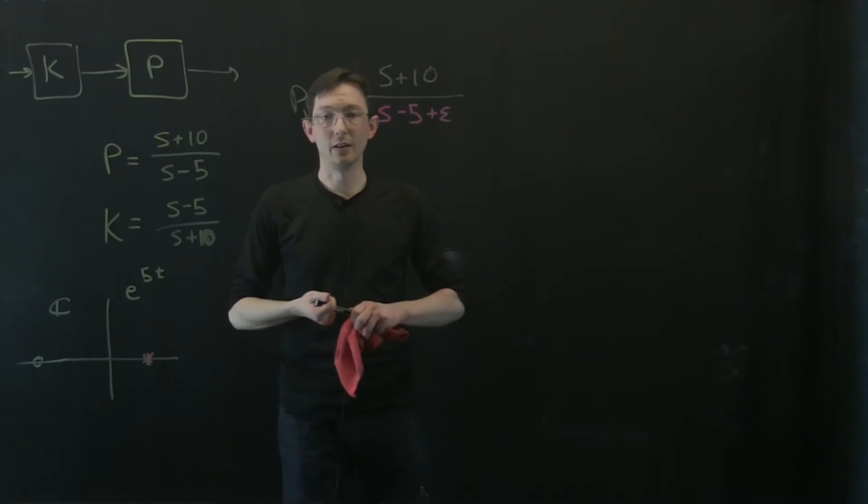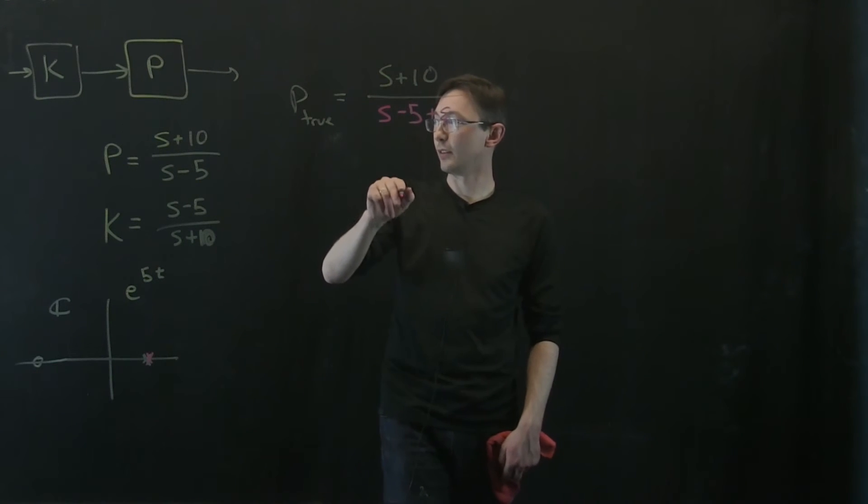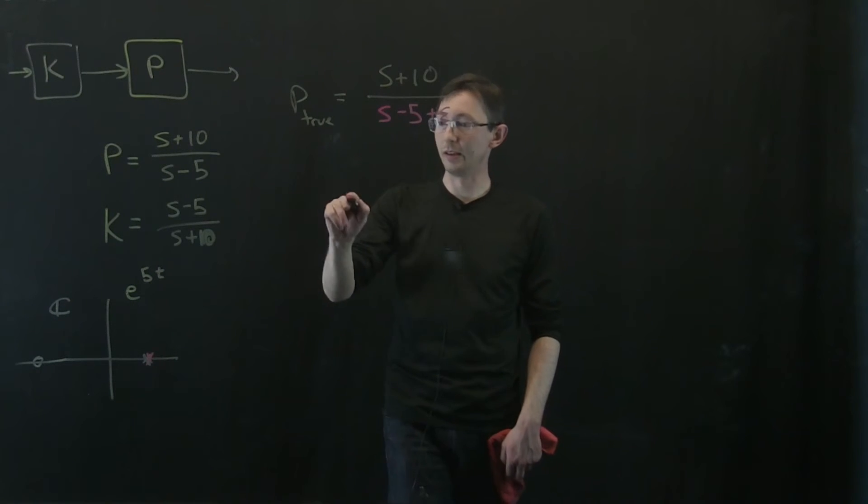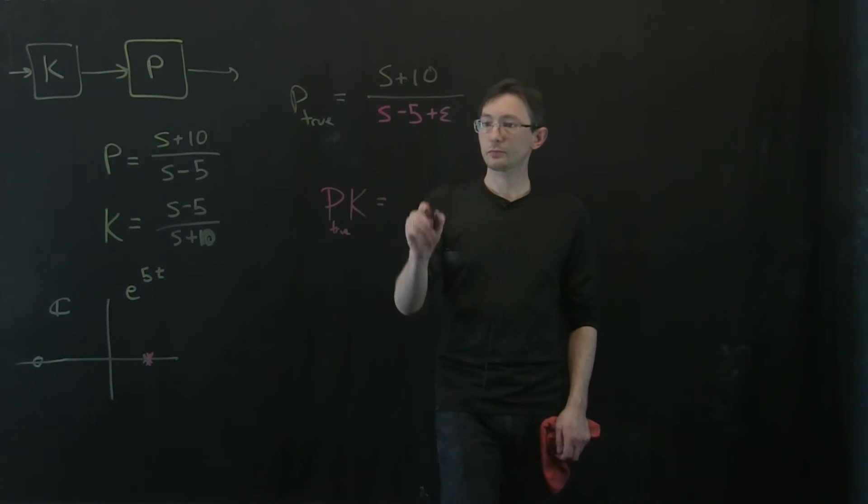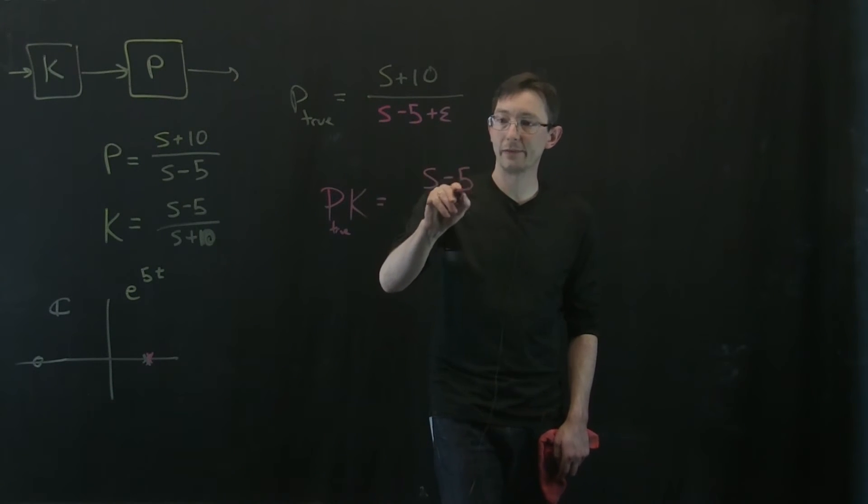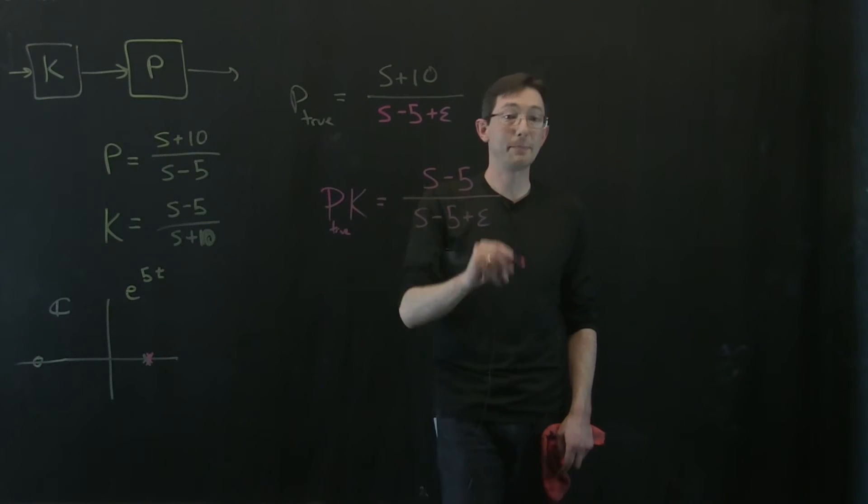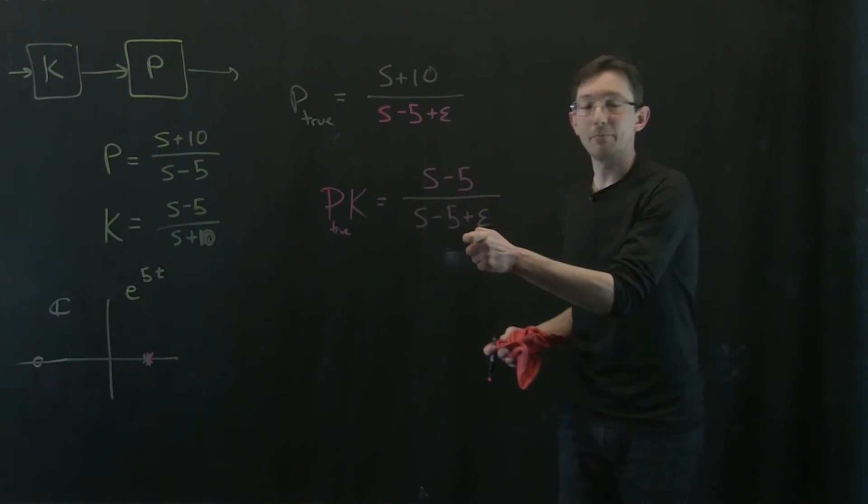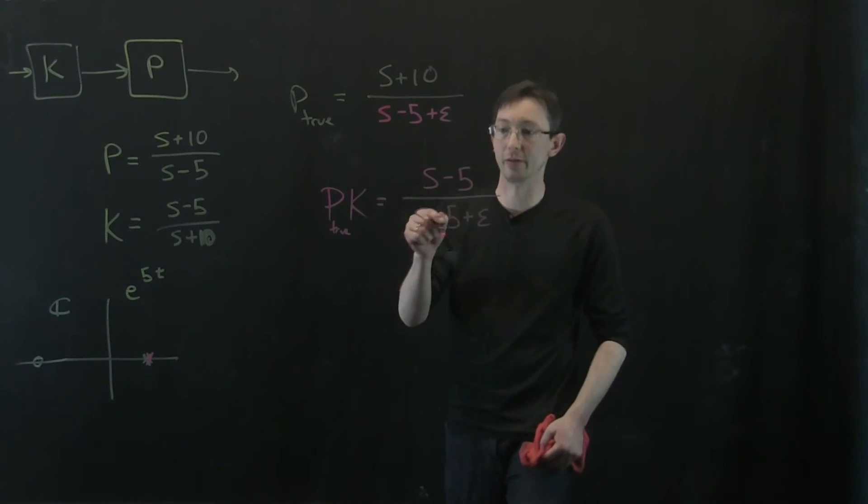Now if I look at P times K, or I hit it with K then P, if I look at P times K now, P true, what I end up with is S minus 5 over S minus 5 plus epsilon. And this is about as bad as you could possibly have for a system. So let me walk you through this.